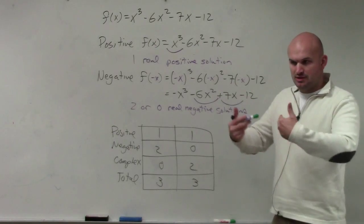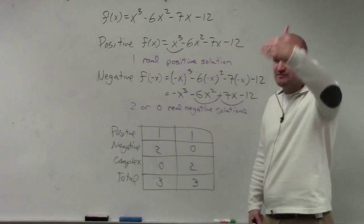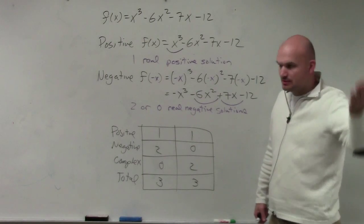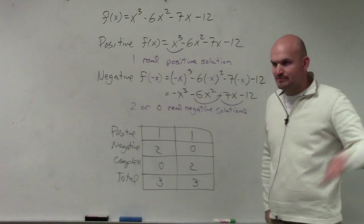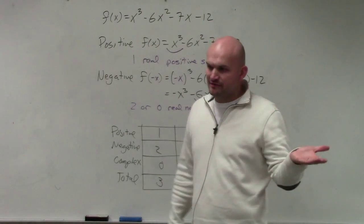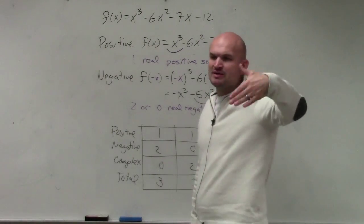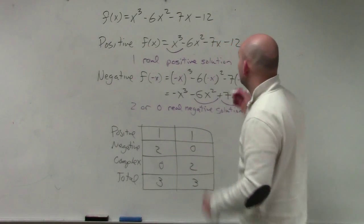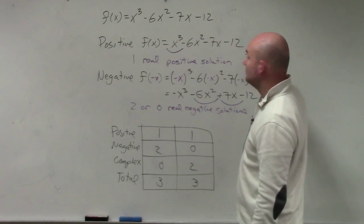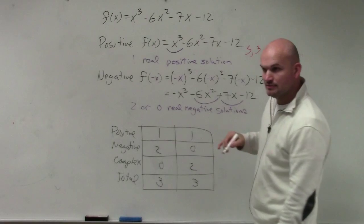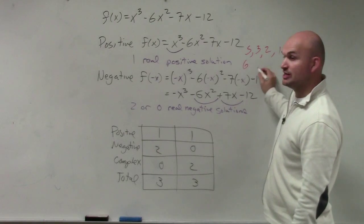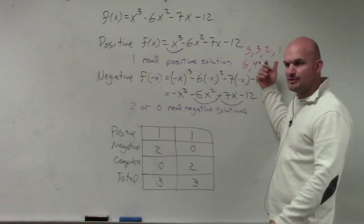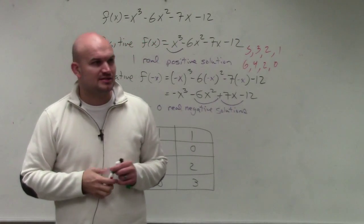That's just the rule of Descartes' rule of signs. It states the number of sign changes minus an even number. So I always just subtract 2, because when you think of even numbers, you think of a number divisible by 2. So just always subtract 2 as many times as you can. So for instance, let's just play a little game. Let's pretend this had five sign changes. Then you do 5, 3, 2, 1. Let's pretend it had six sign changes. Then you do 6, 4, 2, 0. So just always subtracting an even number. Does that kind of make sense? Any last questions on this? OK.